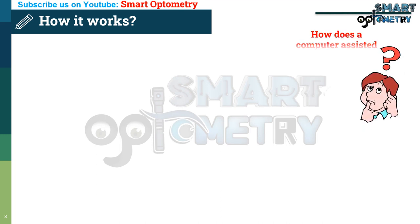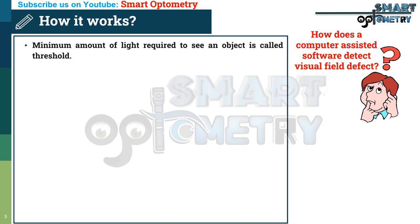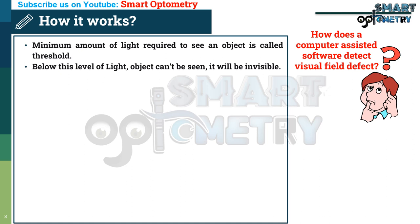Now you might be thinking how does computer-assisted software detect visual field defect? To know how software detects visual field defect, first we need to know about threshold. The minimum amount of light required to see an object is called threshold. Below this level of light, an object cannot be seen — it will be invisible.